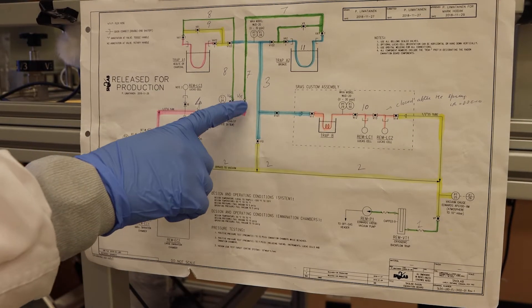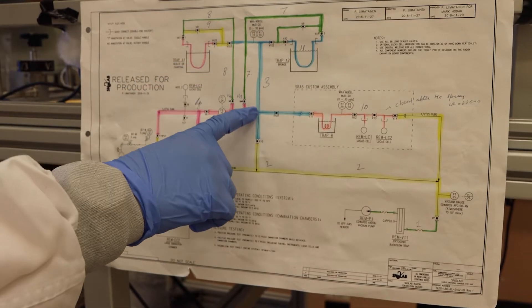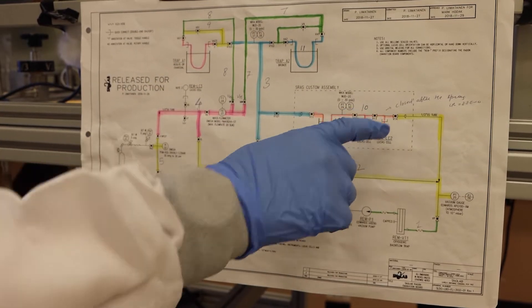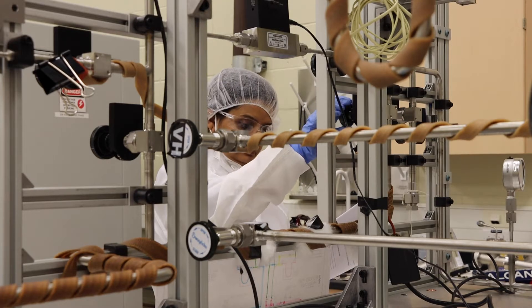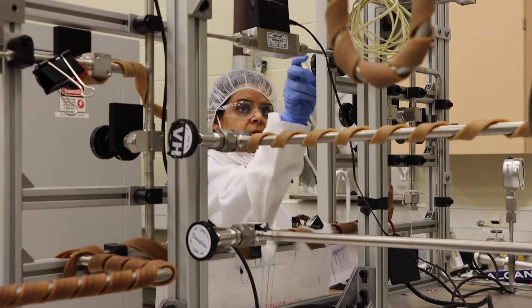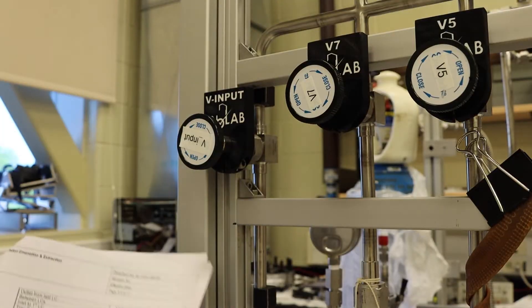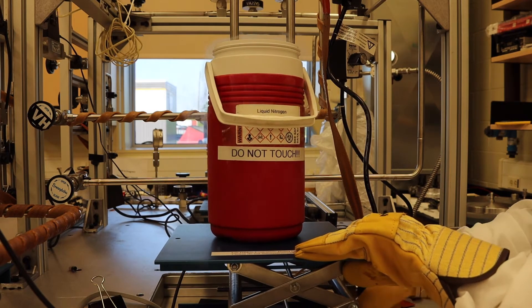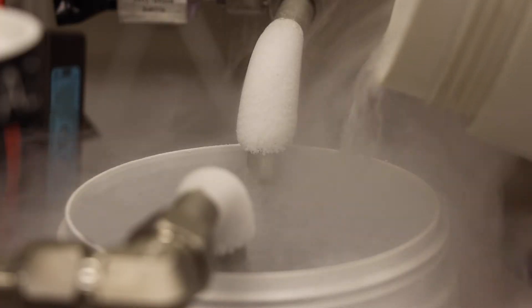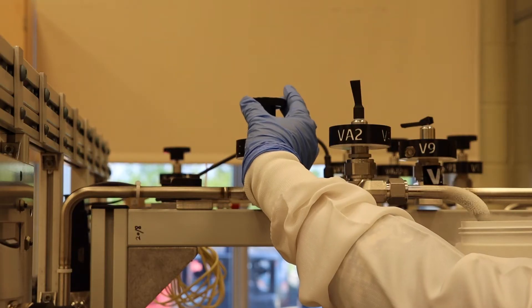Afterward, the extraction phase begins, where radon will travel through an emanation board designed to isolate it. The scientist prepares the correct valve configuration to allow the radon to move from the emanation chamber to the primary trap. Next, the scientist immerses the primary trap in liquid nitrogen, which brings the trap to the exact temperature where radon will stick to it. Other gases will remain in the gas phase and be pumped out of the system.